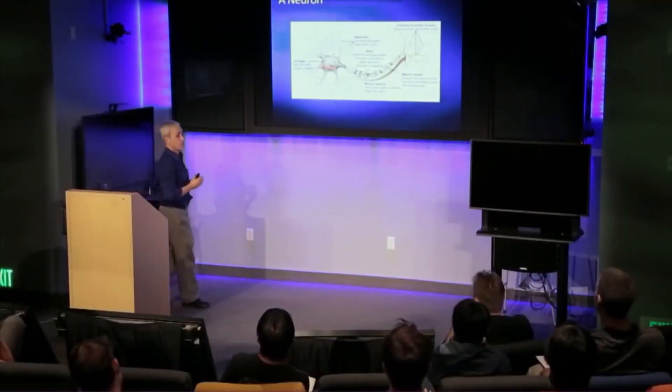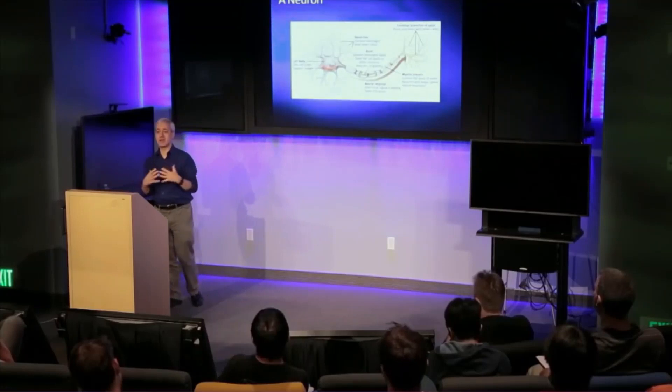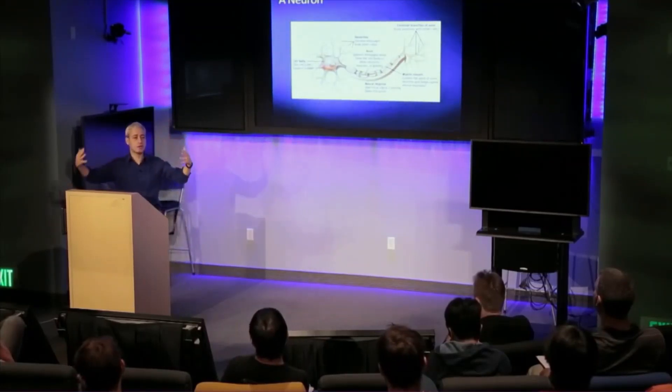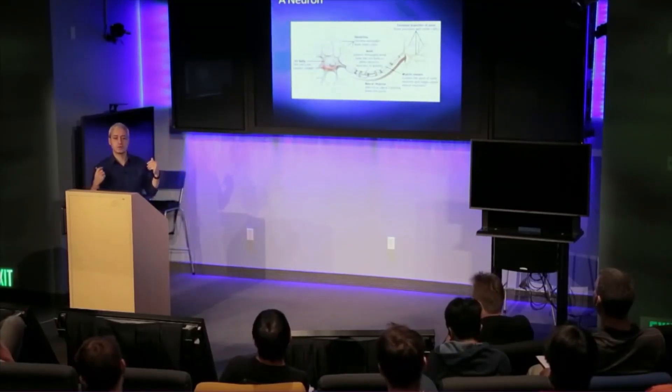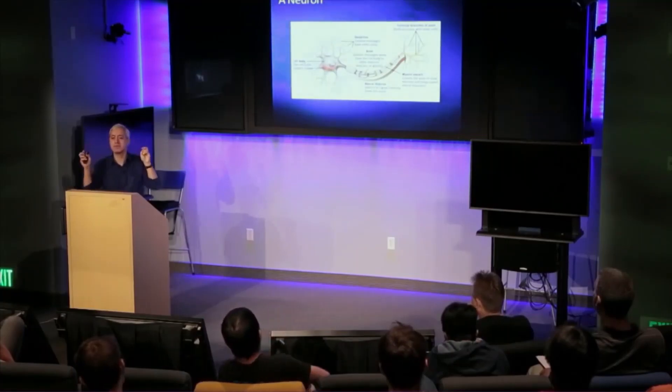And then we're going to put these neurons — these models of neurons — together into big networks, and then we're going to train those networks. At the end of the day, what we have is, in some sense, a miniature brain — much simpler than the real one, but hopefully with some of the same properties.